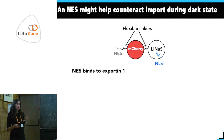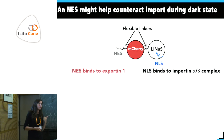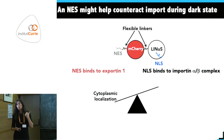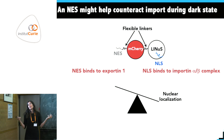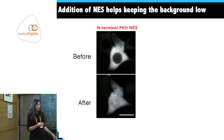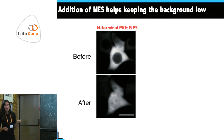It becomes a matter of setting the balance right between the NES binding to the export machinery and the NLS binding to importin alpha and beta. If the NES is too strong the protein stays heavily cytoplasmic and can't be brought in; if the NLS is too strong, adding the NES doesn't help. Taking the construct with mild responsiveness and adding an NES gave us a protein that is truly cytoplasmic in the dark and accumulates inside the nucleus upon light.